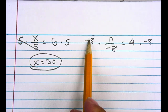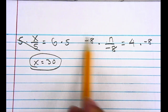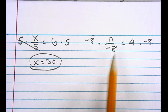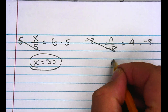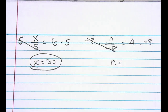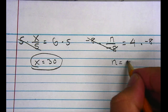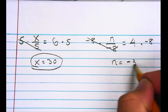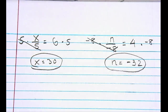Negative 8 times n divided by negative 8 — one time I'm multiplying n by negative 8, the other time I'm dividing by negative 8, so they cancel each other out and make 1. On this side of the equation I'm left with just n. On the other side I have 4 times negative 8. A positive times a negative is negative, and 4 times 8 is 32. So the answer for that problem is n is equal to negative 32.